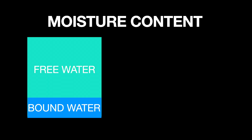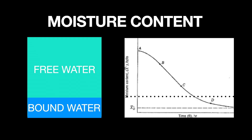Percentage-wise, there is much more free water in wood than bound water. In general, wood that is below 25% moisture content is all bound water.